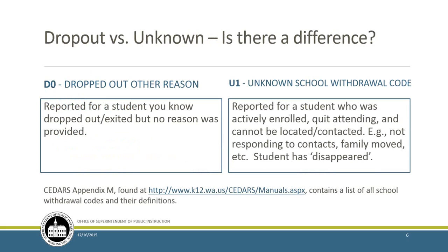We get a lot of questions about why we care—is there a big difference between dropouts and unknowns? Dropouts are reported for students you know who dropped out or exited. With unknowns, we don't know—they just disappear. You make effort to contact them, families move, there's no phone numbers. These are the frustrating ones. If you're curious about the different dropout codes, CEDARS Appendix M in the CEDARS Data Manual section on OSPI contains a list of all school withdrawal codes and their definitions. There's a link at the bottom of slide six.